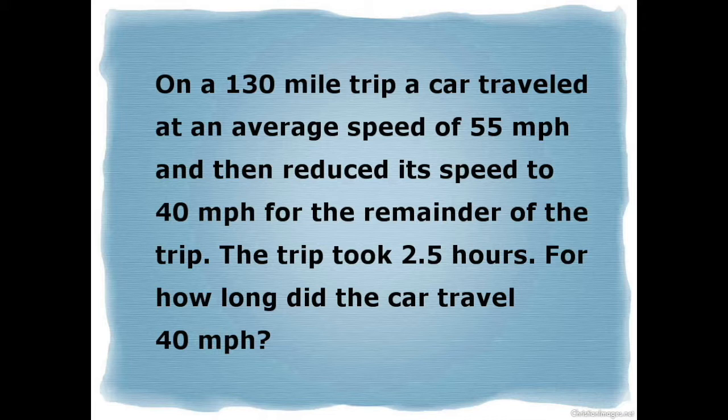On a 130 mile trip, a car traveled an average speed of 55 miles per hour and then reduced its speed to 40 miles per hour for the remainder of the trip. The trip took 2 and a half hours. For how long did the car travel 40 miles per hour?